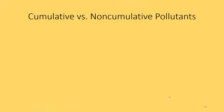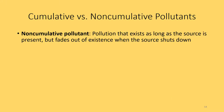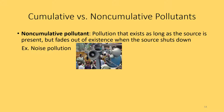Let's talk about cumulative versus non-cumulative pollutants. A non-cumulative pollutant is pollution that exists as long as the source is present but fades out of existence when the source shuts down. An example might be noise pollution — as long as something is making a lot of noise disturbing the environment, that pollution is present. But as soon as that noise pollution is turned off, the environment returns to the level it was at before, and nothing is added that won't go away once the source is shut down.